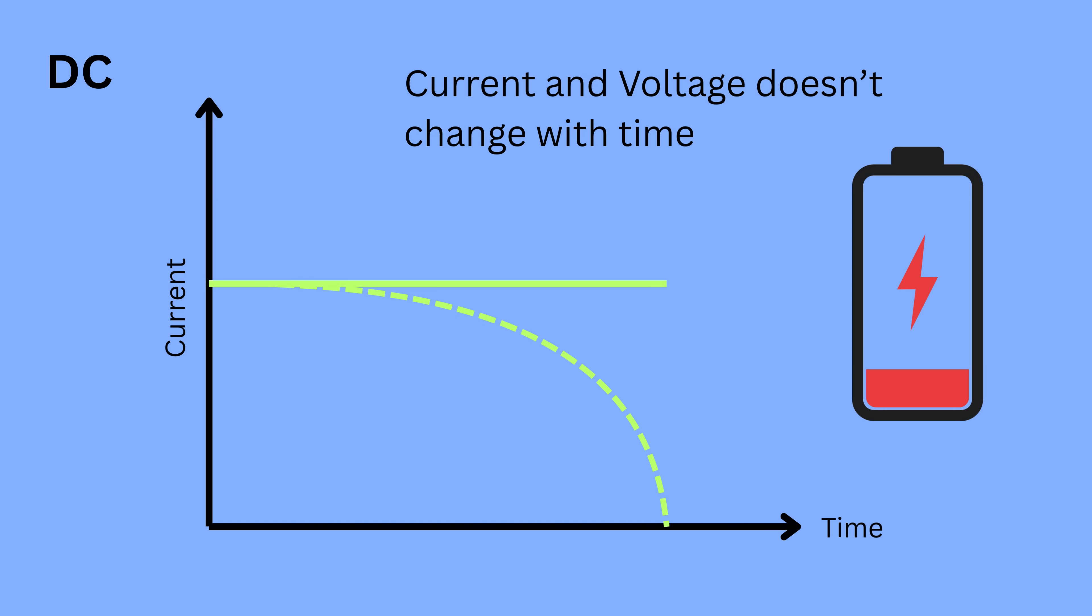If you plot current on y-axis and time on x-axis, the graph mostly appears as a straight horizontal line, because the current doesn't change with time. Note that sometimes the current in DC can slowly decrease with time, for example, when a battery starts losing energy as it gets discharged.